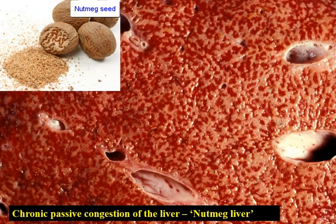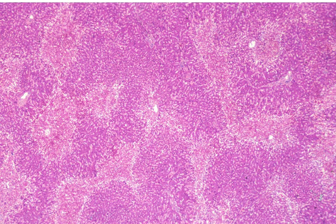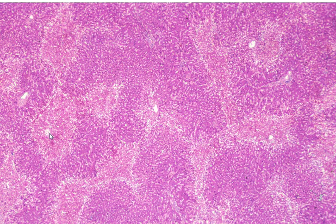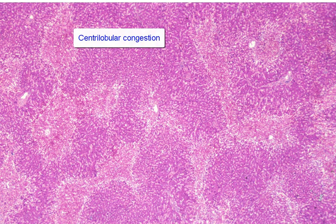So what does nutmeg liver correspond to? If we examine this under the microscope, we will see there are two different colors in the areas I am highlighting here. These are areas of marked congestion, and again another area here, and these are around the central vein. So this is due to chronic venous congestion.